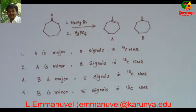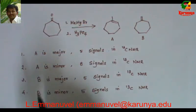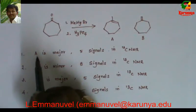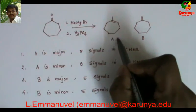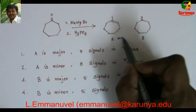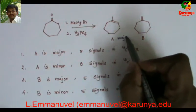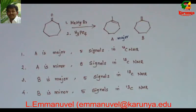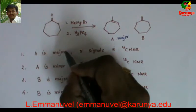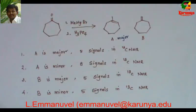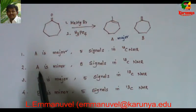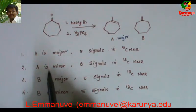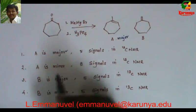Now let us go to the given options. This is A and this is B; A is major and B is minor. The first statement says A is major — this is correct, because it is the highly substituted olefin and that is the Zaitsev product. The second statement says A is minor — no, this is wrong.